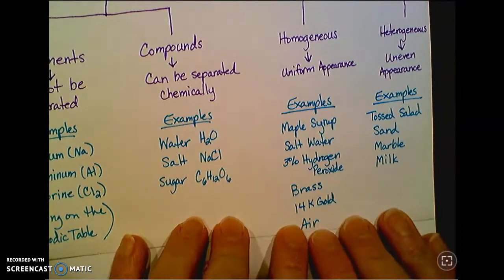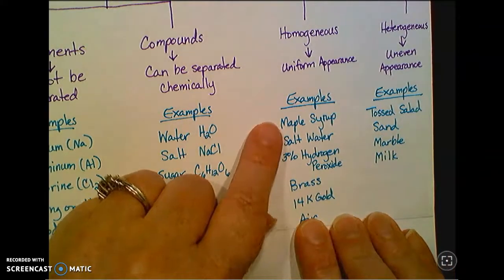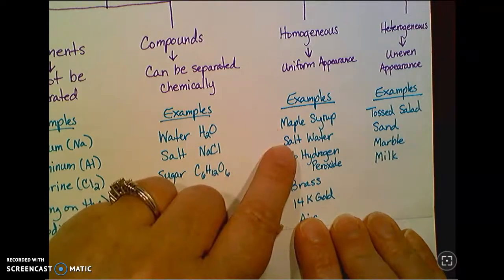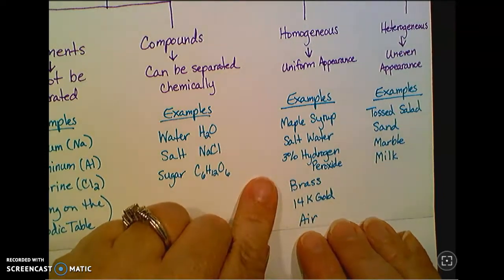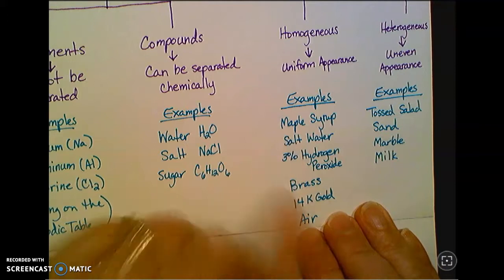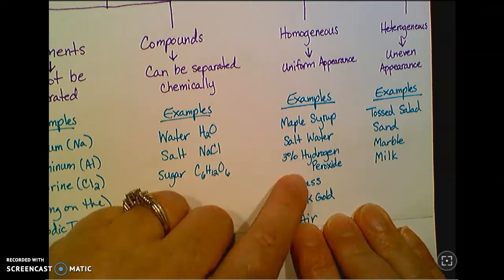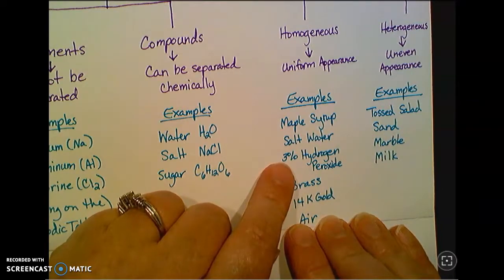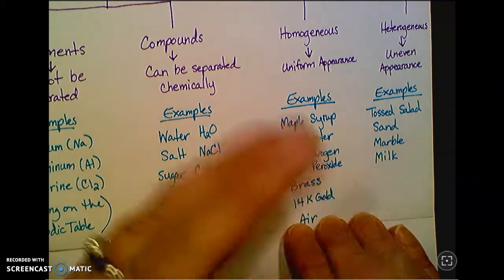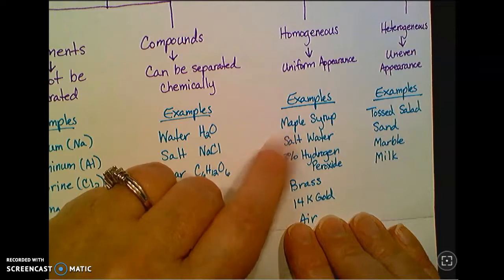Examples of homogeneous mixtures are things you're probably aware of. Maple syrup is basically sugar and water. Salt water is salt with water. 3% hydrogen peroxide is the stuff in the brown bottle that you get at CVS or Walgreens. You put it on the cut and it fizzes or bubbles. But that 3% tells me that it's a mixture. It's 97% something else, which is water. But I could also have 30% hydrogen peroxide. If you ever have your hair bleached, it's maybe 10% hydrogen peroxide. It's a much stronger mixture than what you could get at the drugstore.